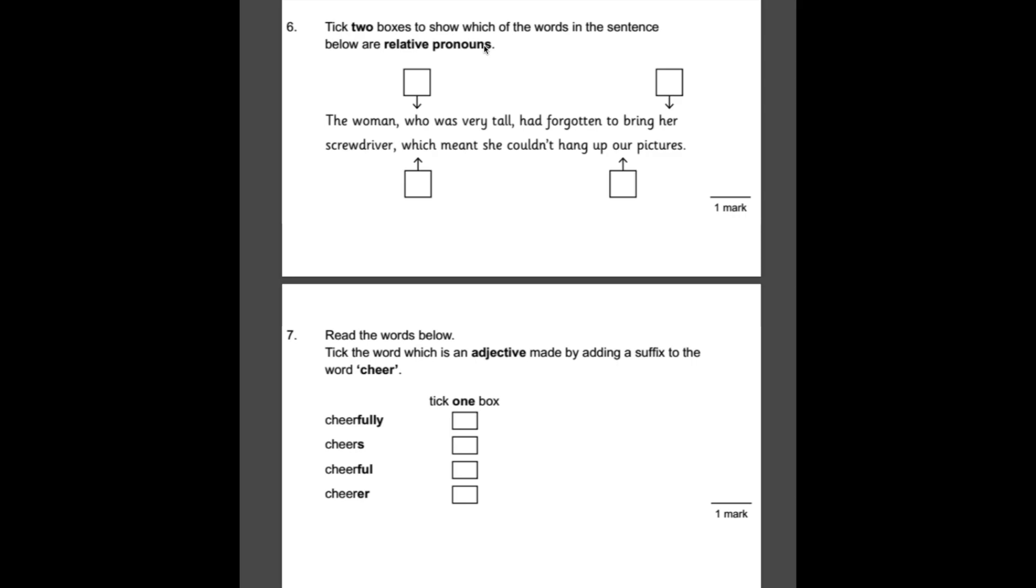Number six, tick two boxes to show which of the words in the sentence below are relative pronouns. Fortunately, these are things you just need to learn off by heart. A very quick clue I can give you is they tend to start with a W. And they also tend to follow a comma. But I'll put a link in the description to a list of relative pronouns so that you can go away and learn them if you don't already know them. So the answer in this case would be who and which.